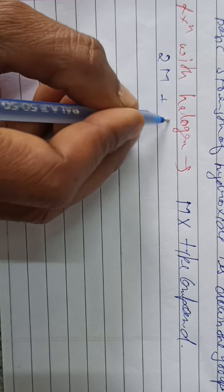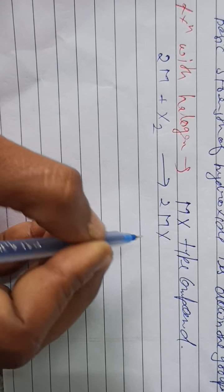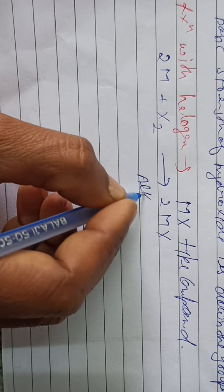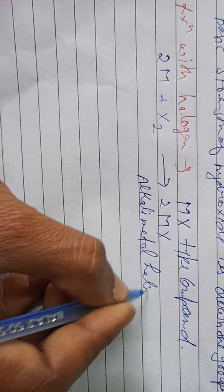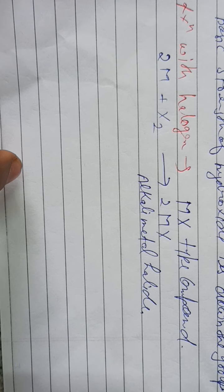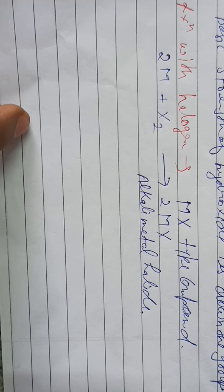2M react with X2 and form 2MX, which is alkali metal halide.